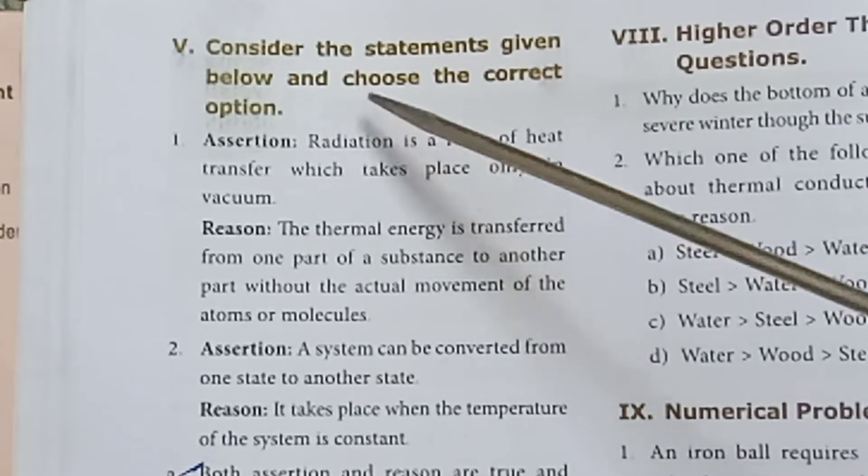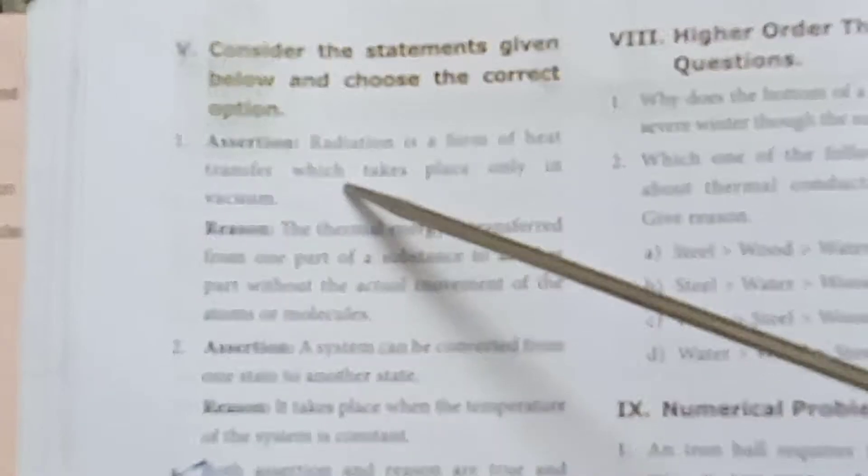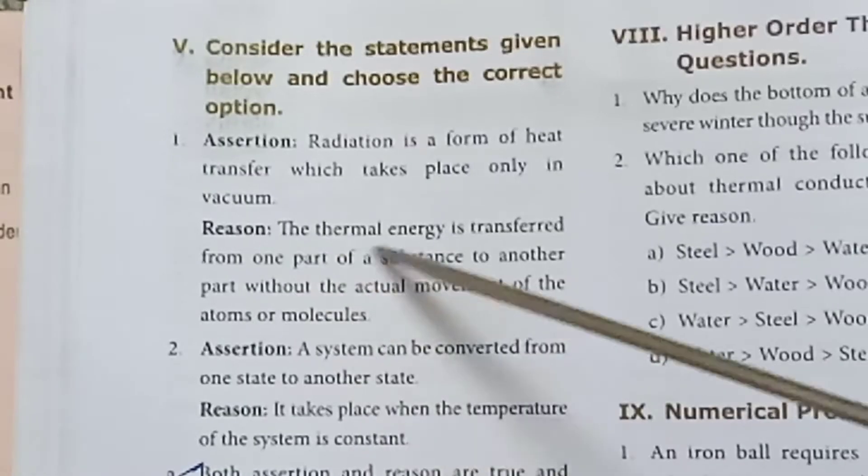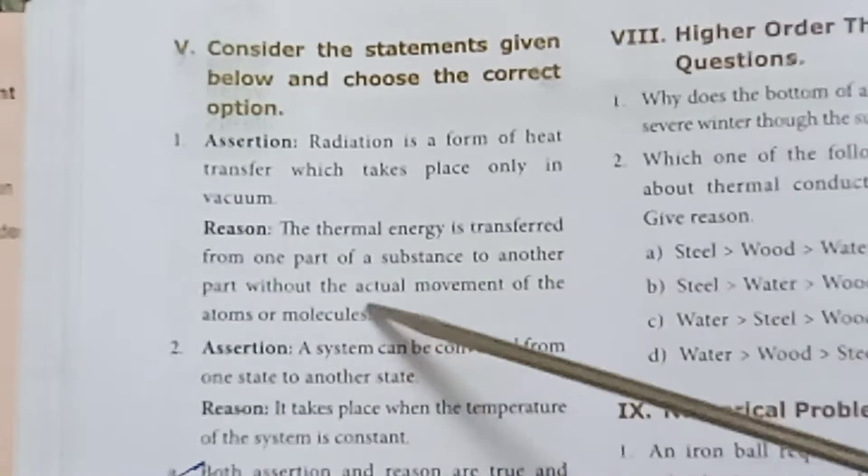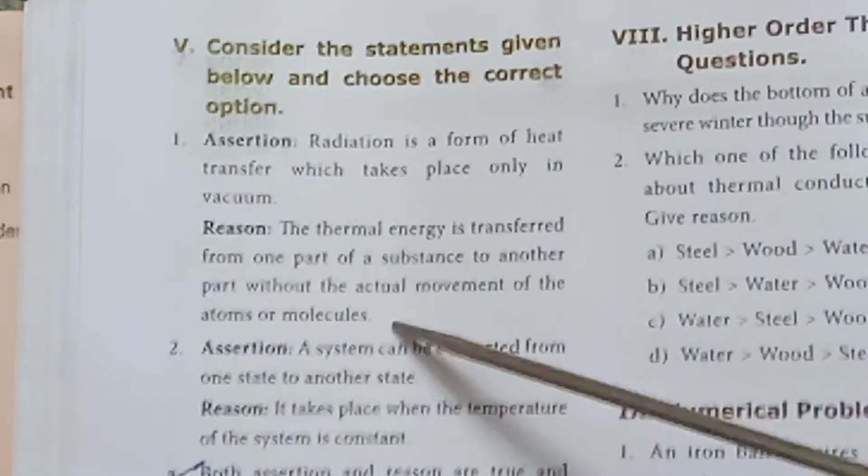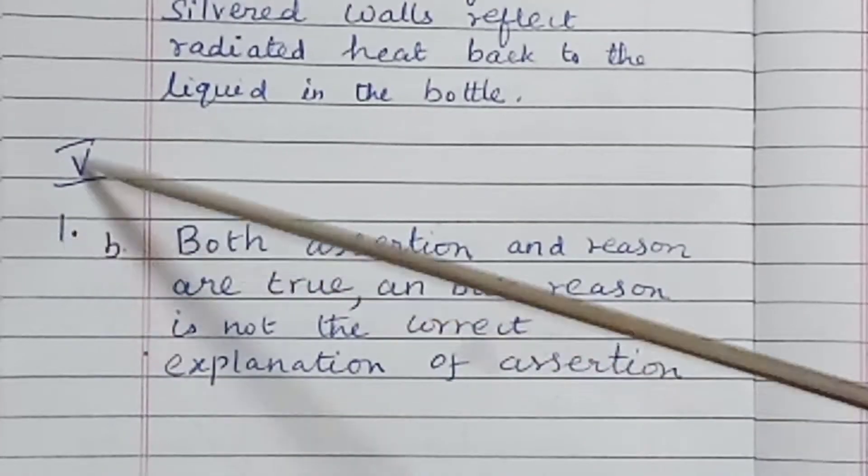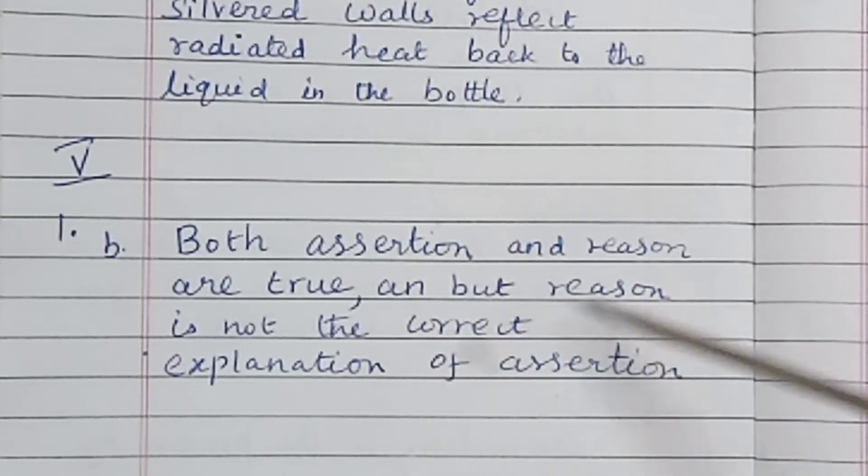Eighth one: First one, Assertion: Radiation is a form of heat transfer which takes place only in vacuum. Reason: The thermal energy is transferred from one part of a substance to another part without the actual movement of the atoms or molecules. Answer: B, both assertion and reason are true but reason is not a correct explanation of assertion.